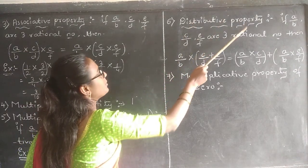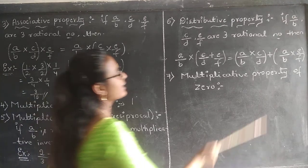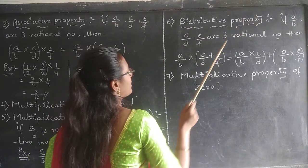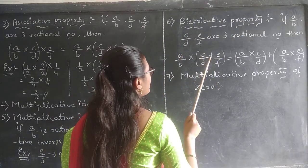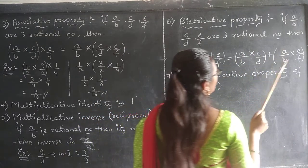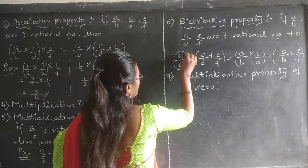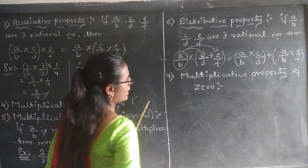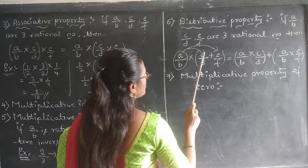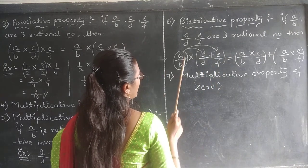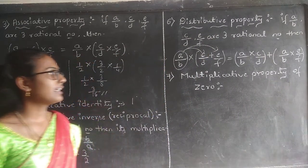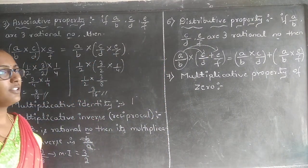If I take any 3 rational numbers A/B, C/D and E/F, the distributive property states that A/B into (C/D + E/F) is equal to A/B into C/D plus A/B into E/F. That is what the distributive property of multiplication over addition states.